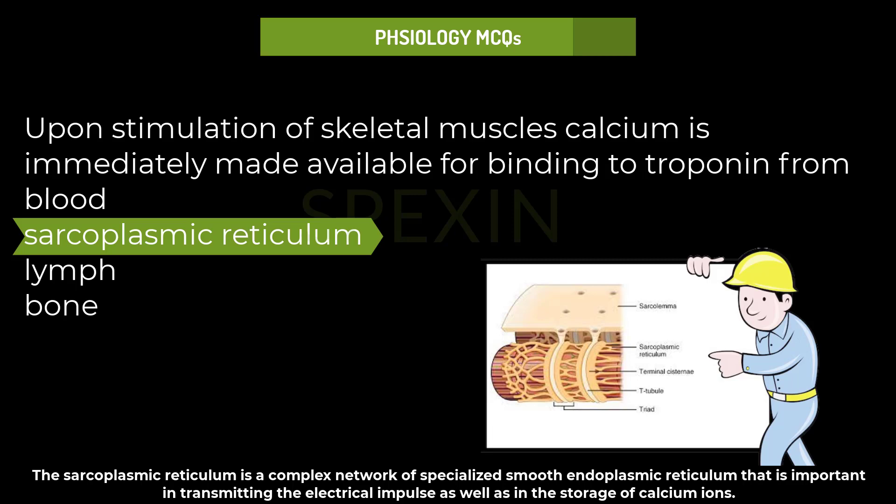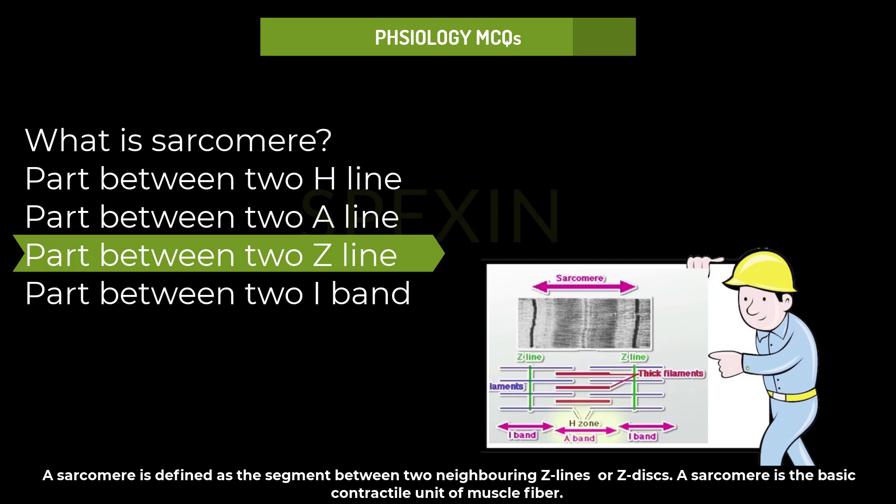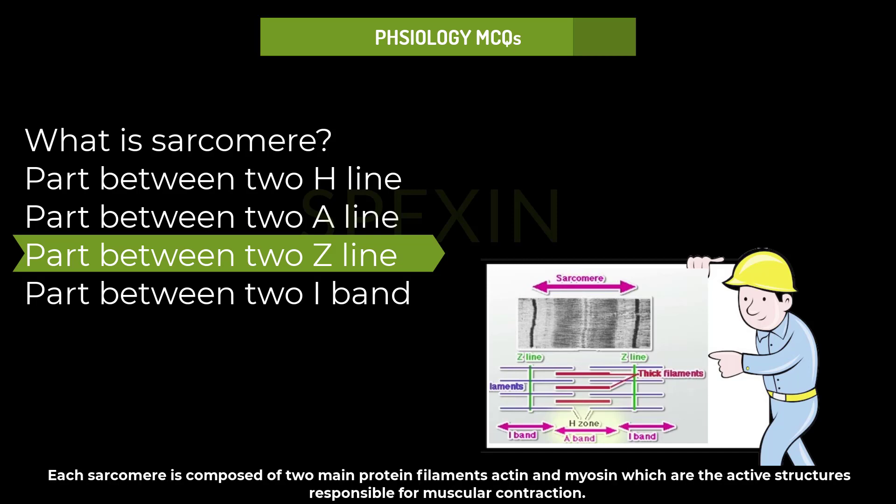What is a sarcomere? Part between two H lines, two A lines, two Z lines, or two I bands? A sarcomere is defined as the segment between two neighboring Z lines or Z discs. A sarcomere is the basic contractile unit of muscle fiber, composed of two main protein filaments — actin and myosin — which are responsible for muscular contraction.